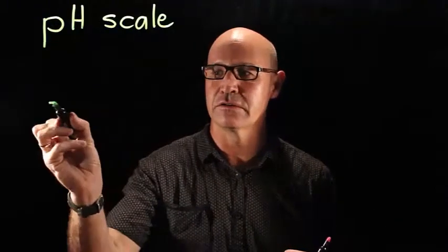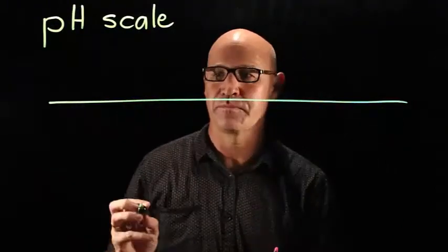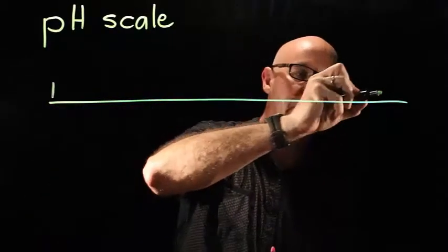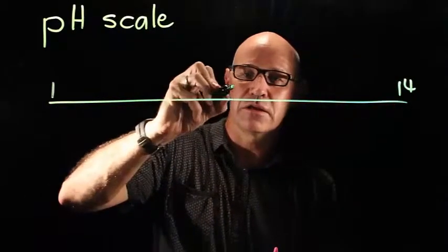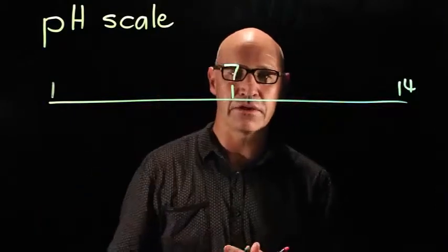We're able to measure acids and bases using a scale called the pH scale, which is a scale from 1 to 14 with a midpoint here at 7.